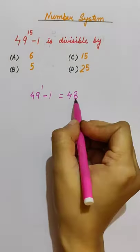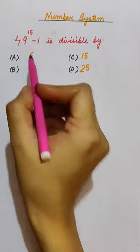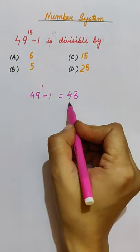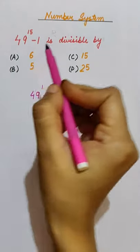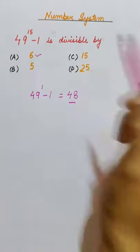So this number is divisible by 6. This means that this number is also divisible by 6.